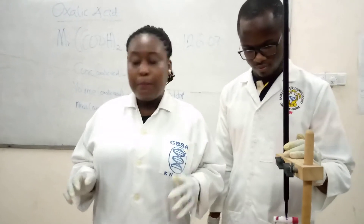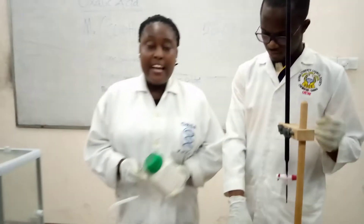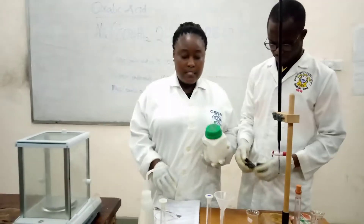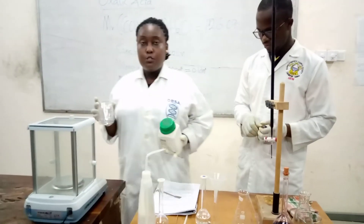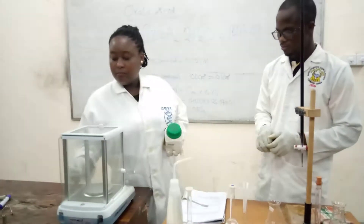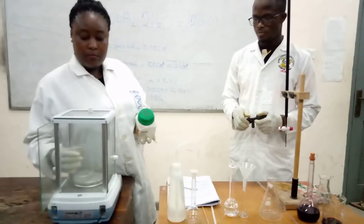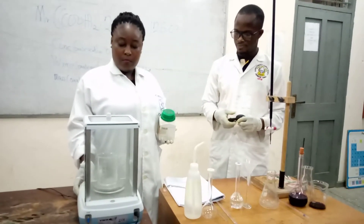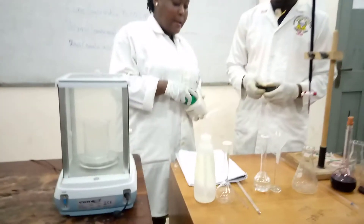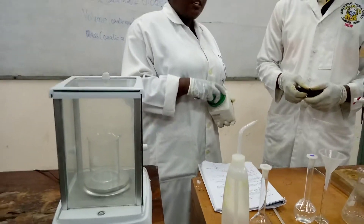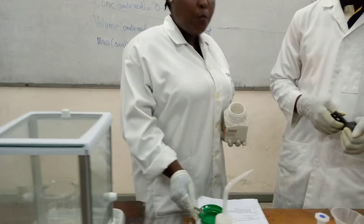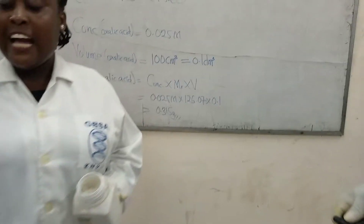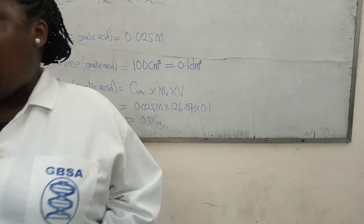Now I'm going to demonstrate how to prepare the oxalic acid solution. When I prepare it, then Isaac will pipette it. I have my oxalic acid and my beaker cap. The mass of oxalic acid I'm weighing is on the board — it's 0.315 grams. The calculation is there, so that's what I'll be weighing.